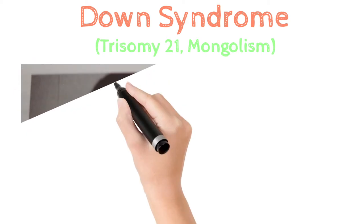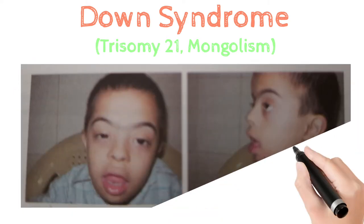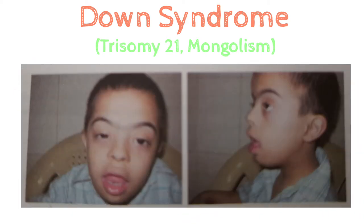Let's divide the entire topic into four headings: Introduction, Clinical Features, Dermatoglyphics, and Cytogenetics and Risk of Down syndrome.